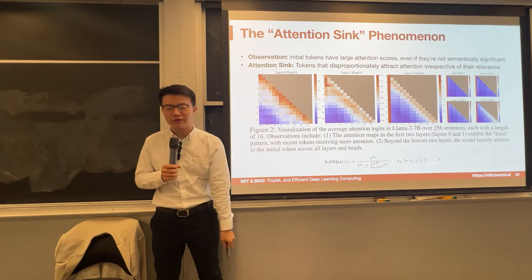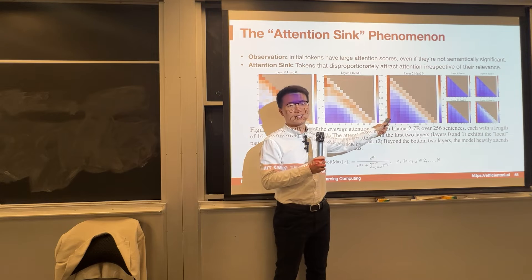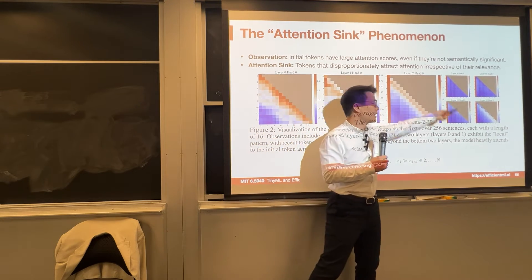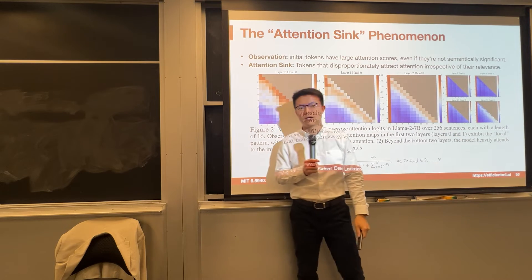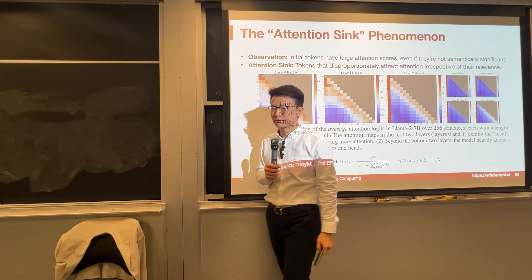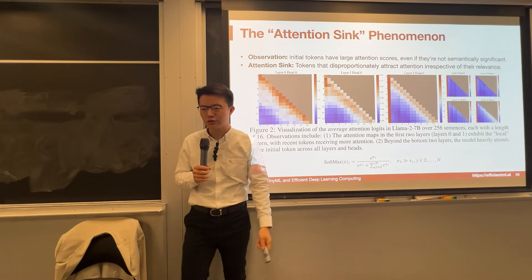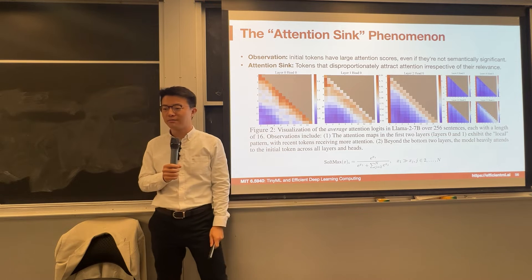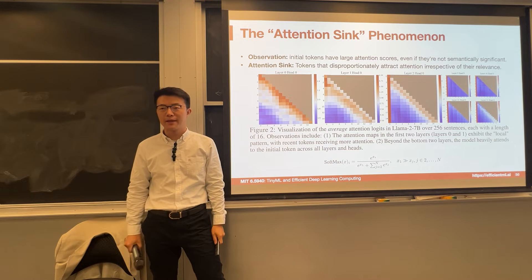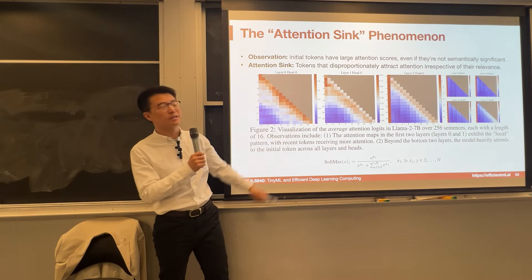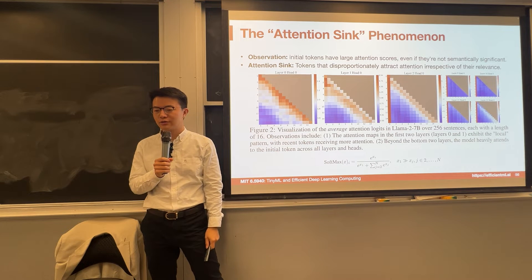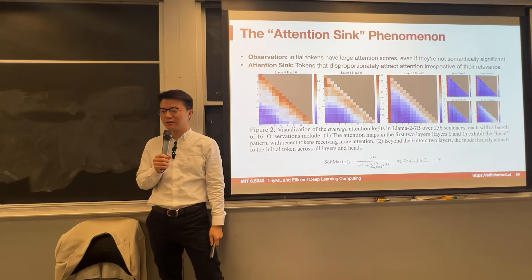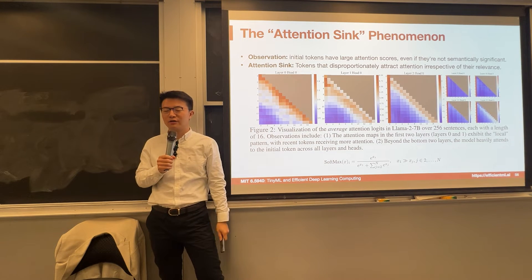The interesting phenomenon we find is that the first token is just so important — a lot of attention. After layer two and many other randomly sampled layers, there is a big attention to the first token. So the initial tokens have huge attention scores even if they are not semantically significant. We call it the attention sink — those tokens disproportionately receive such high attention irrespective of their semantics.